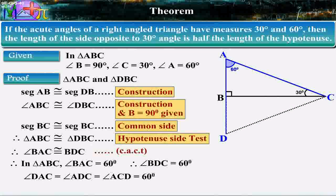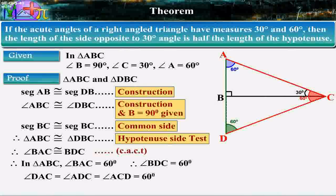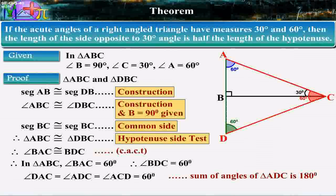Angle DAC is equal to angle ADC is equal to angle ACD is equal to 60 degrees, since sum of angles of triangle ADC is 180 degrees.